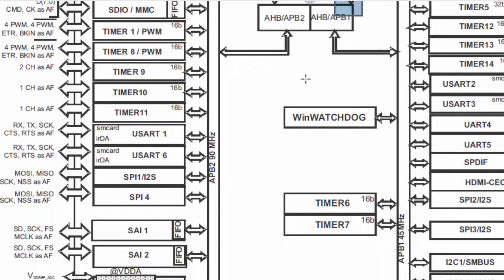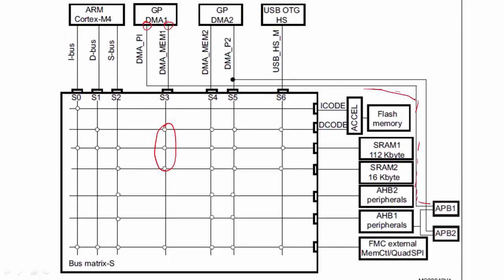For DMA2, it also gives out two buses: one peripheral bus going to the APB2 bus, and that peripheral bus is also connected to the bus matrix so it has the capacity to access all the slaves. By contrast, DMA1's peripheral bus can only talk to the APB1 peripherals, while DMA2's peripheral bus can talk to the APB2 bus as well as all the other slaves. So DMA2's peripheral bus has more privileges than DMA1's peripheral bus.